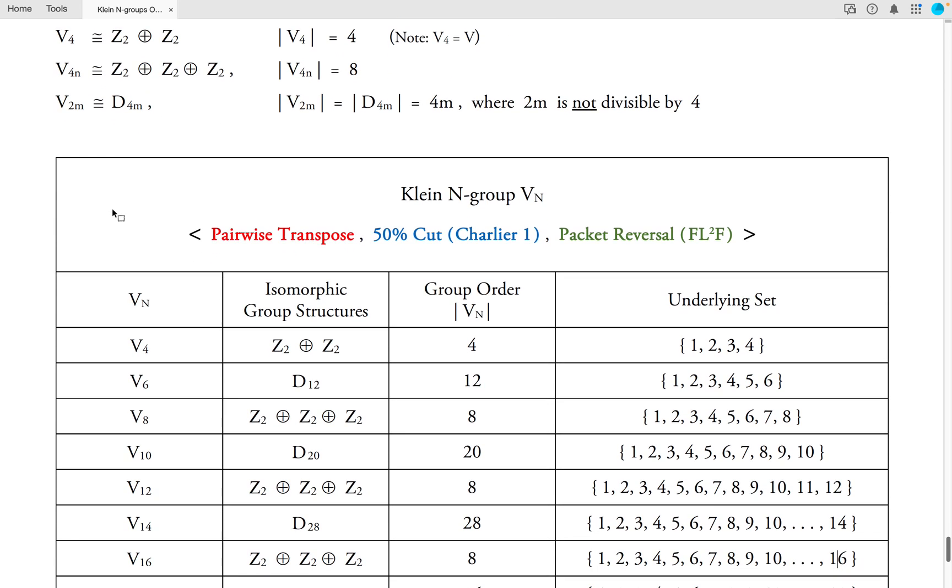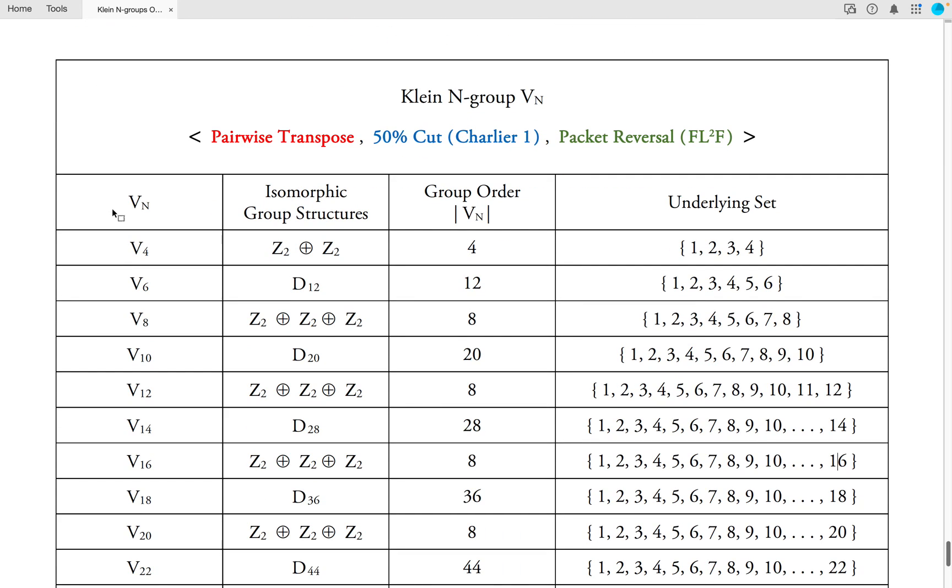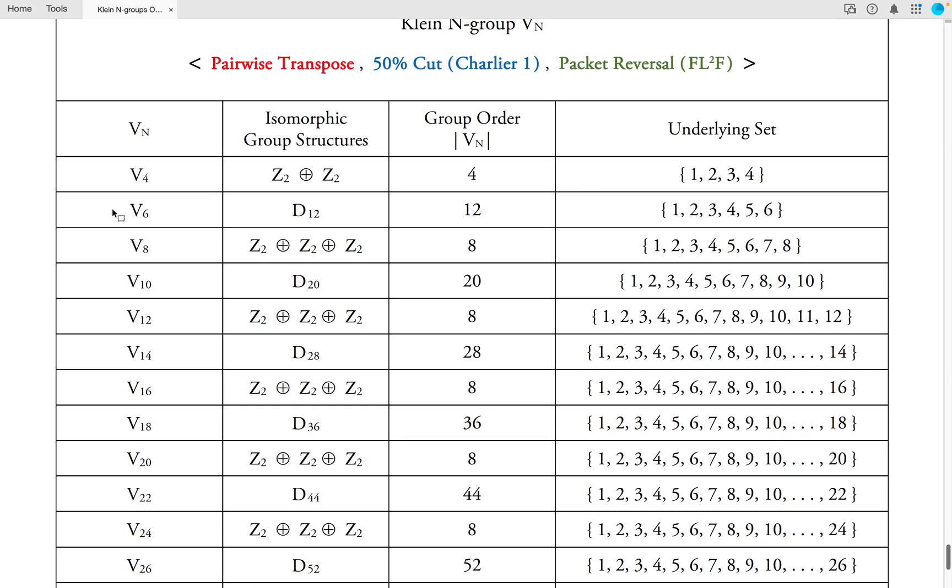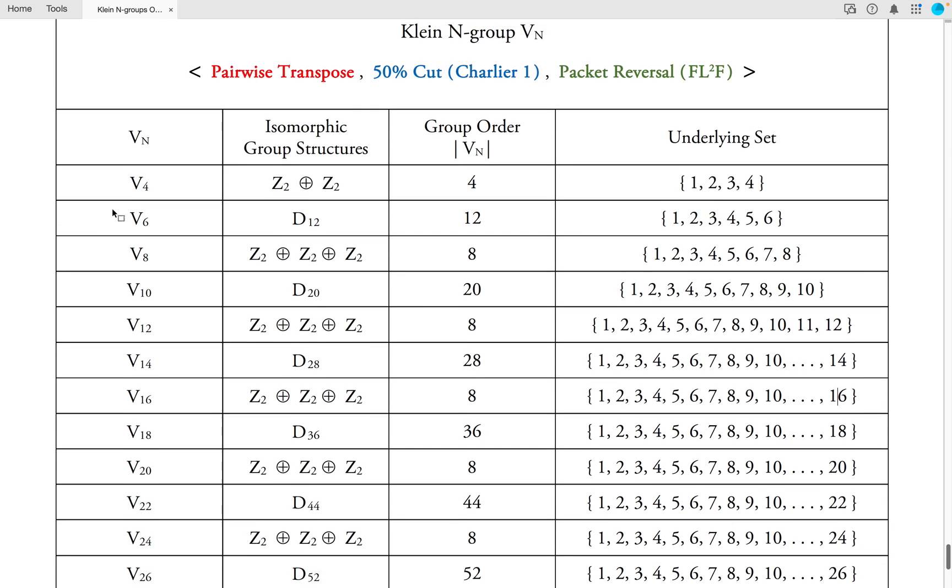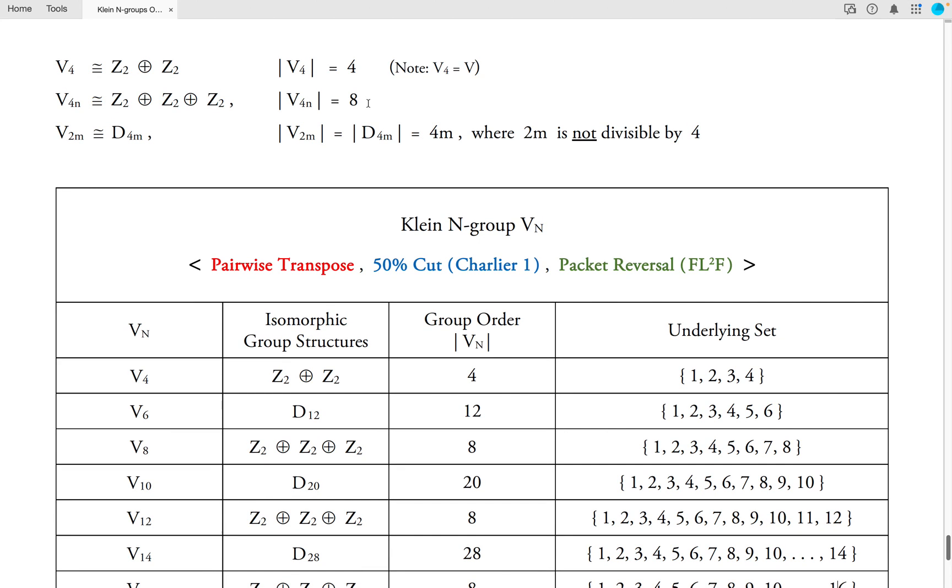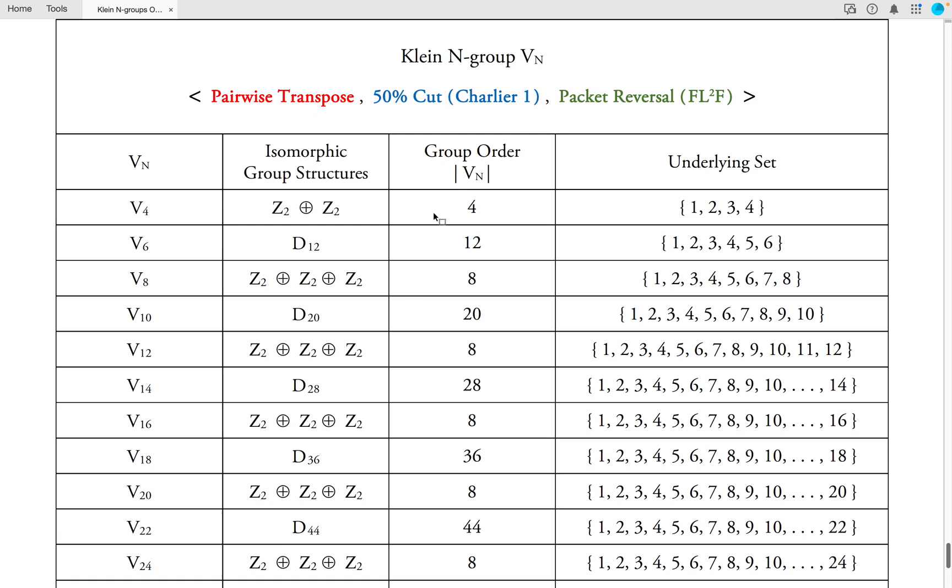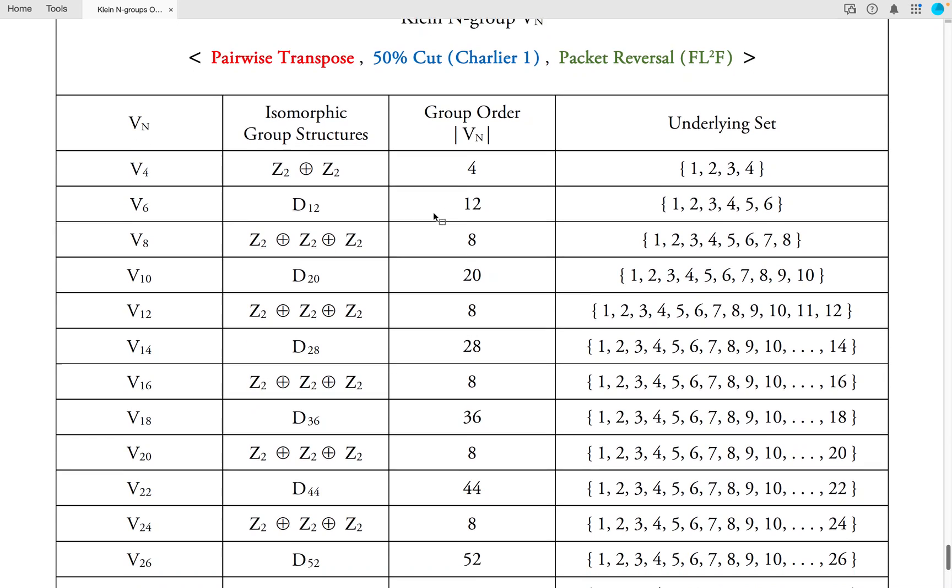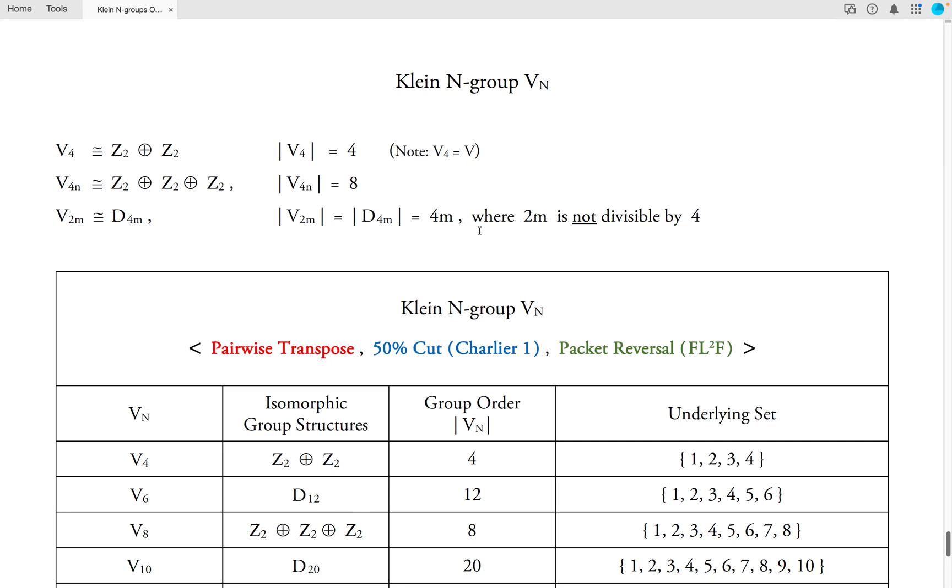And I should mention that each of these groups have unique preservation properties relative to CMA sequences and CMA structures. And among many interesting features, you'll notice that the Klein N group, where N is a multiple of 4, always has order 8. Whereas for every other even value of N, the group structure of the Klein N group becomes arbitrarily large, as indicated on the bottom line here.